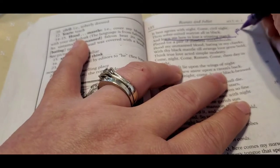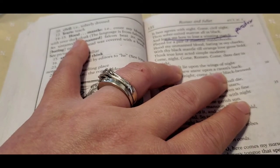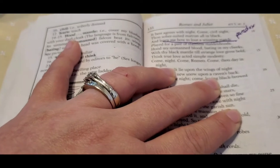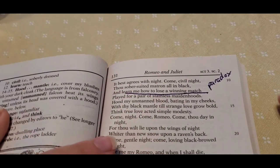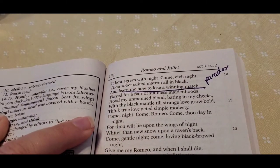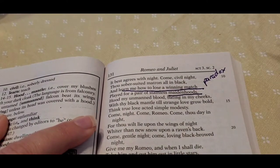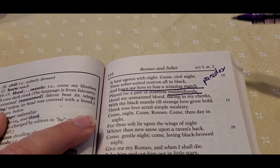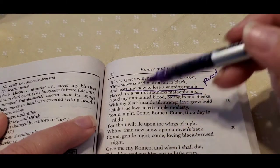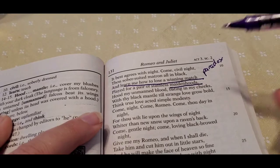Come civil night, sober and matron all in black, and learn me how to lose a winning match. So this is a paradox, because she's losing and she's winning at the same time. Keep in mind that this whole thing is about her wedding night, so she's obviously losing something, and we talked about that maidenhoods is virginity. She's losing, but at the same time, she's winning.